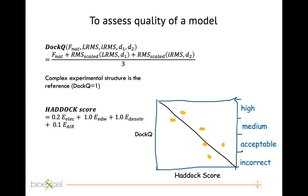To assess the quality of the models we use two parameters: DOCKQ and the HADDOCK score. The HADDOCK score is energy-based — decreasing HADDOCK score means lower energy. DOCKQ varies from 0 to 1, where 1 means the model is identical to the experimental structure. DOCKQ is defined using structural criteria based on native contacts and RMSD of the interface area and ligand position, allowing us to classify structures from incorrect up to high quality.